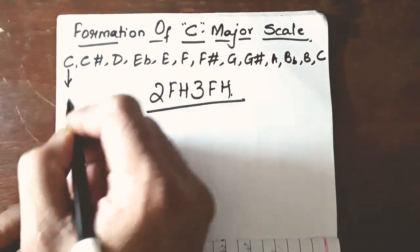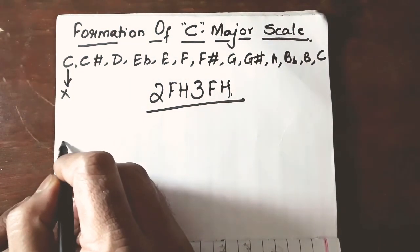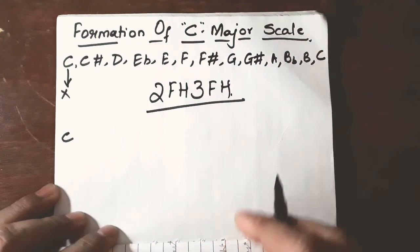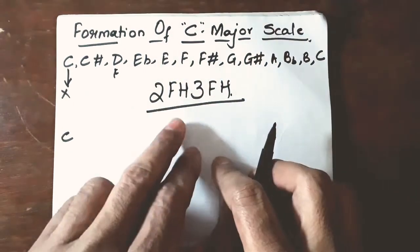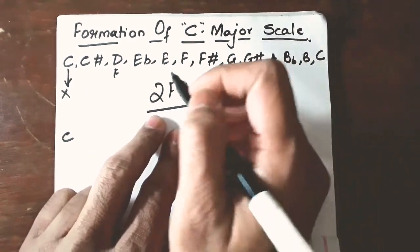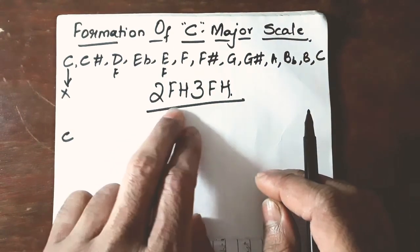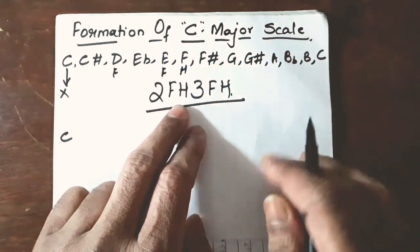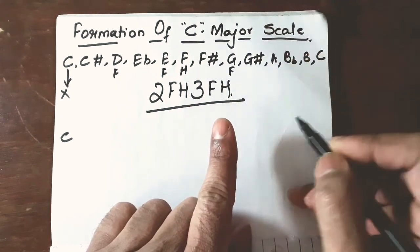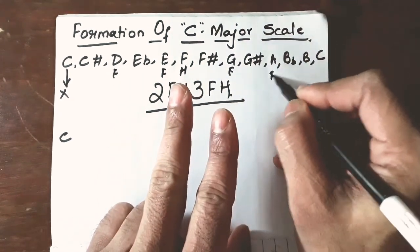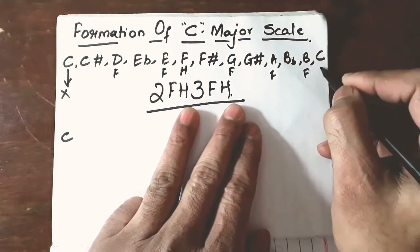So, this is the starting point, this will be as it is I will write down this over here C right 2F. So, first F is D I will write down D next 1F is over second F is here F. Then after that it is H, after that there will be 3F the first F is this second F is this third F is this and after that H that is here.